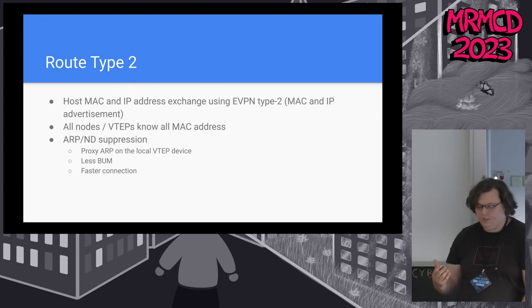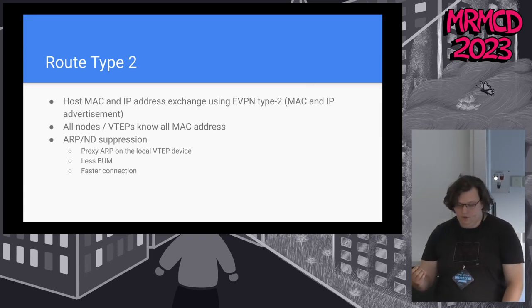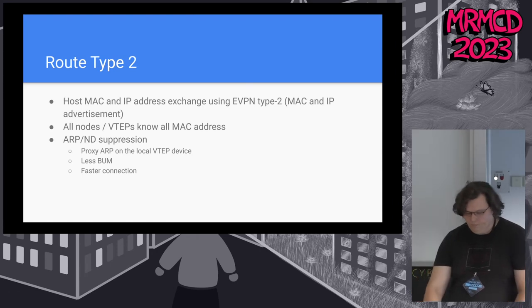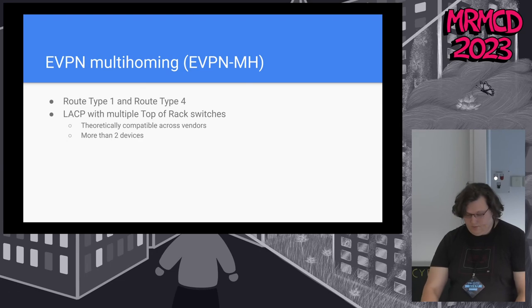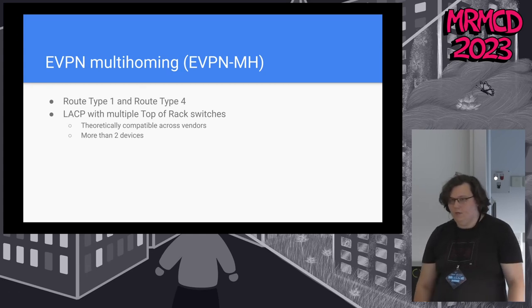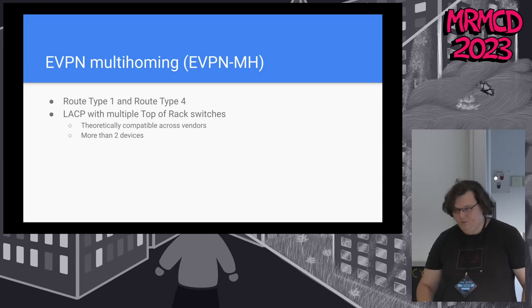All nodes in the network know which IP address and which MAC address is where, which has the big advantage that I don't have to learn anything anymore on the data plane. Another advantage is that I'm capable of doing ARP and neighbor discovery suppression, and can do a proxy ARP on the local VTEP device — I have less BUM traffic and connection build-up is faster. Another big advantage is multi-homing for LACP. I can use the built-in EVPN features and connect LACP to multiple switches between different vendors — at least in theory, though in practice cross-vendor setups can be a fun surprise when they break after a few weeks.